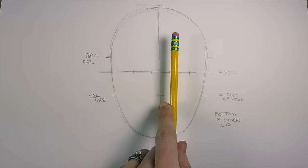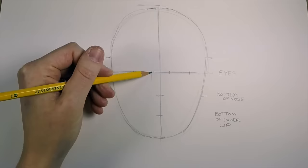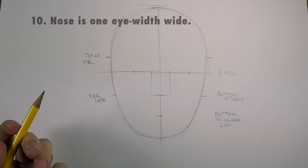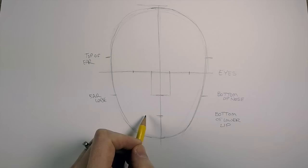Next up, we want to figure out how wide our nose is. If you were to hold your pencil straight up on either side of your nose, it should line up with the corner of your eye. If we were to draw these lines down right here, that is about how wide your nose is—so that also tells us that our nose is one eye width wide.